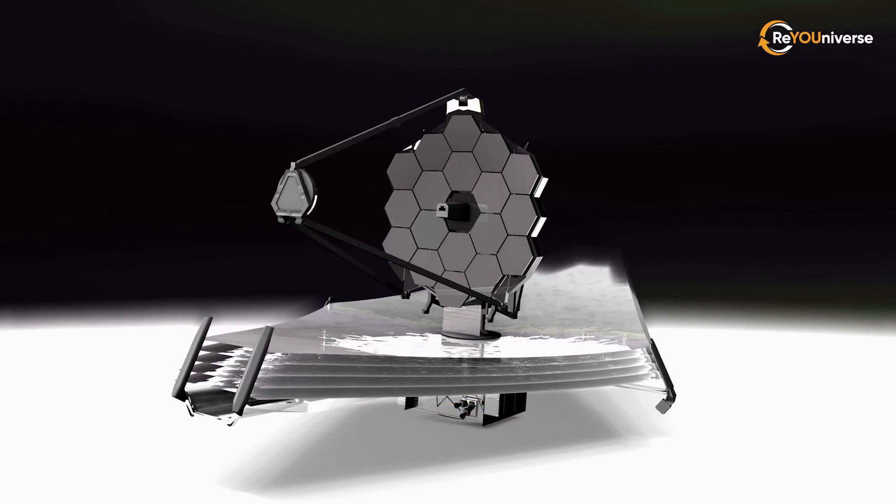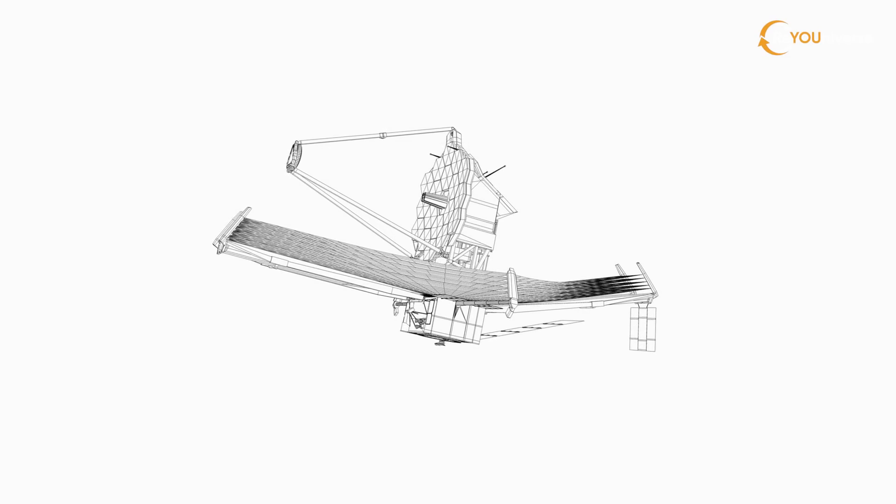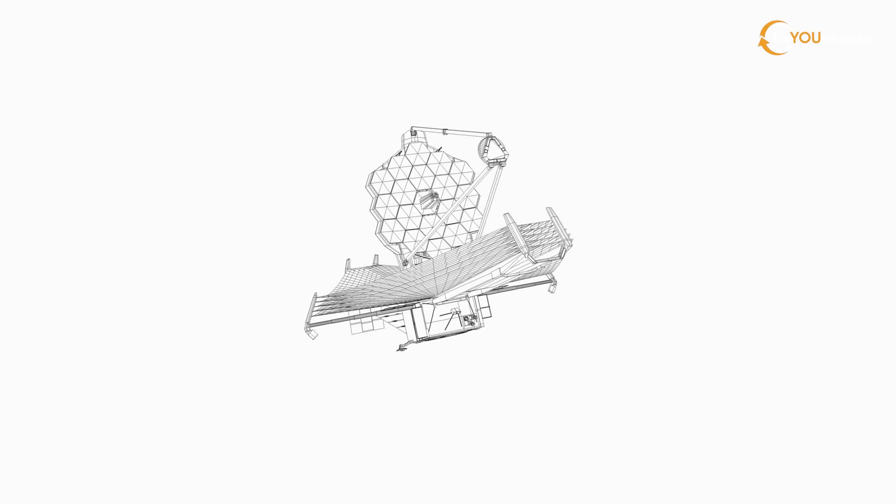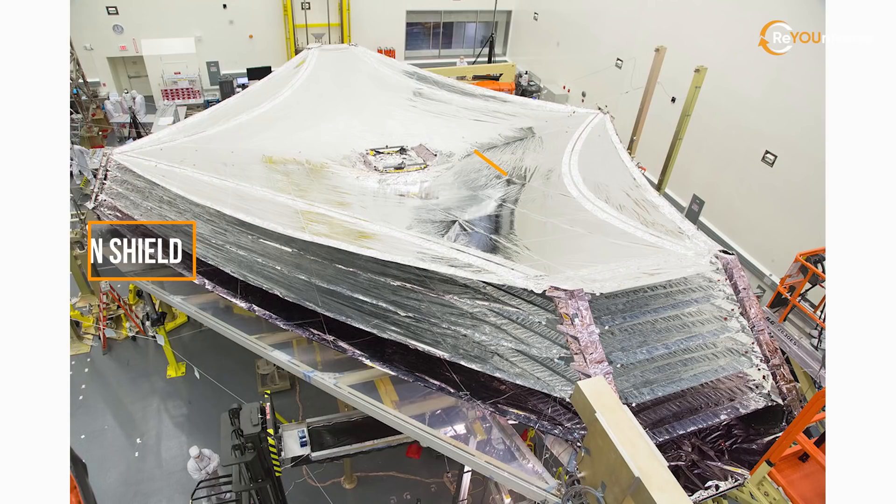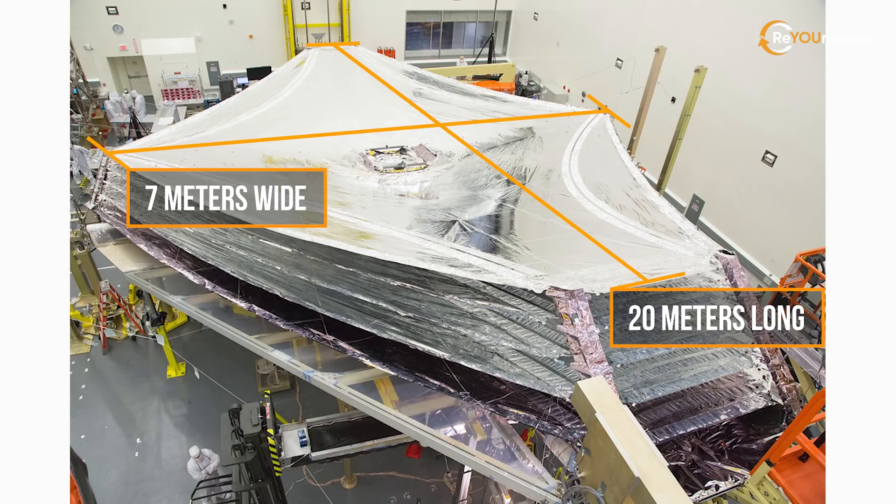What is this incredibly expensive tool? James Webb is a quite large structure compared to other modern space telescopes. Its most impressive part is the sunshield, which is 20 meters long and 7 meters wide. This is equivalent to a tennis court.